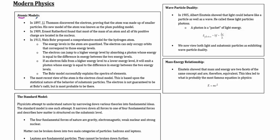The first bit of modern physics we're going to talk about is atomic models — basically the history of the atom. The first model is the Thompson model. J.J. Thompson created the plum pudding model. He assumed the atom was mostly positive material with negative charge embedded into it — like a chocolate chip cookie dough, where the embedded plums are the negative charge and the pudding itself is the positive charge.